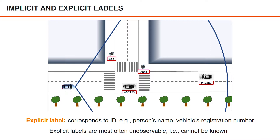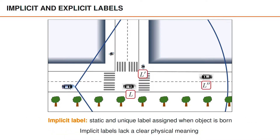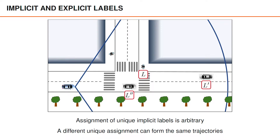It can be argued that a vehicle's registration number could be observed by a camera, but that's an exception to the general rule. If we consider pedestrians, neither their names nor their social security numbers would show up in data from a camera, a lidar, or a radar. So instead of explicit labels, we use implicit labels, which are static and unique labels assigned when the object is born — here we have labels L, L prime, and L double prime. The assignment of unique implicit labels is arbitrary; there's an infinite number of different unique label assignments that could form the same trajectories.